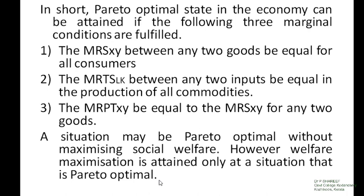Thus we can conclude that Pareto optimality in an economy can be attained when these three marginal conditions are fulfilled. They are: number 1, the marginal rate of substitution between commodities X and Y must be equal for all consumers; number 2, the marginal rate of technical substitution between labor and capital must be equal in the production of all commodities; and number 3, the marginal rate of product transformation between commodities X and Y must be equal to the marginal rate of substitution between the same commodities X and Y. Thus, by fulfilling these three conditions, Pareto optimality can be achieved.